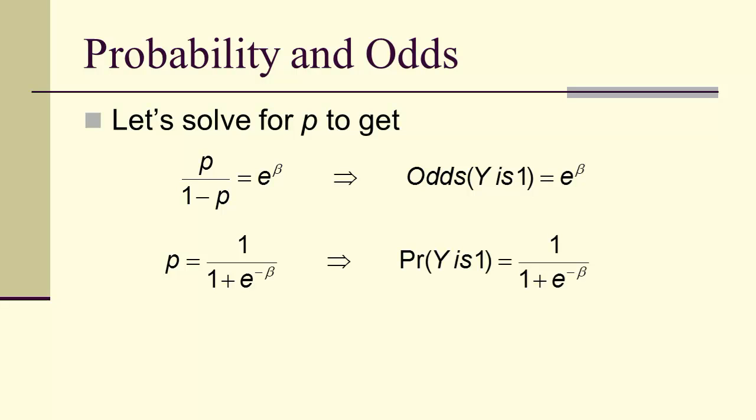And then we solve for p itself when we get the probability that y is 1 is 1 over 1 plus e to the negative beta.